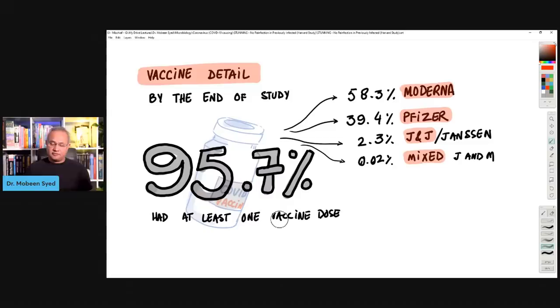Vaccine detail. By the end of the study, of course when the study started, December 2020, very few people were vaccinated. And then as the study continued to go, and then the mandate came in as well for healthcare workers, more and more people got vaccinated. So by the end of this study, September 2021, 95.7% of the individuals in this study were at least one dose vaccinated. The vaccines breakdown was 58.3% had received Moderna, 39.4% Pfizer, 2.3% Johnson & Johnson, and 0.02% or one person had mixture of Johnson & Johnson and Moderna. So this is the study. This is the second part. The detail is done as well.